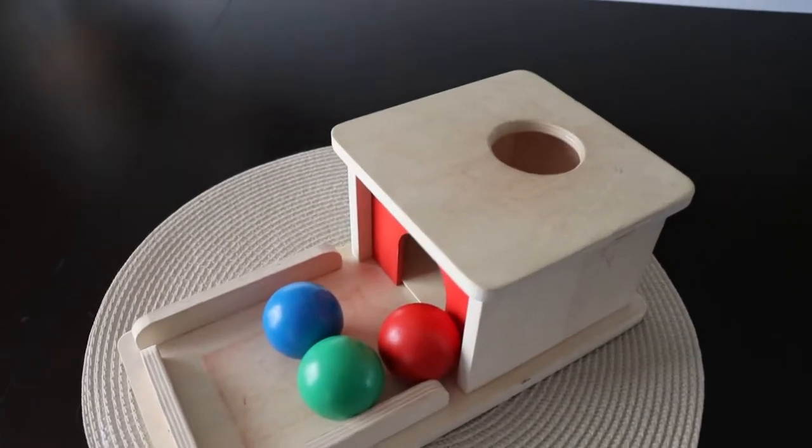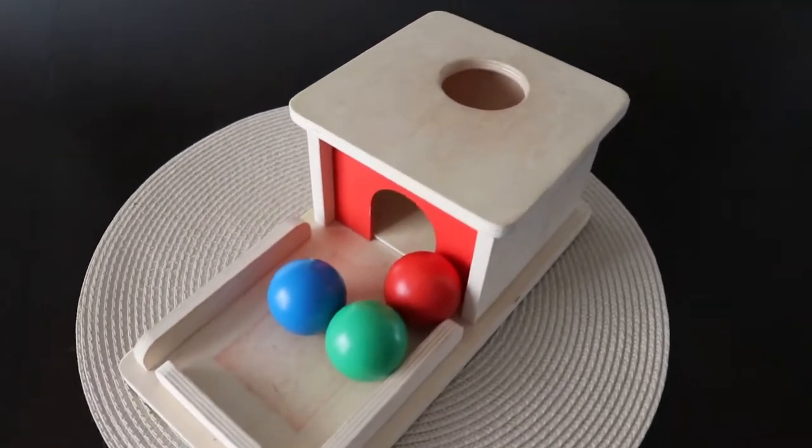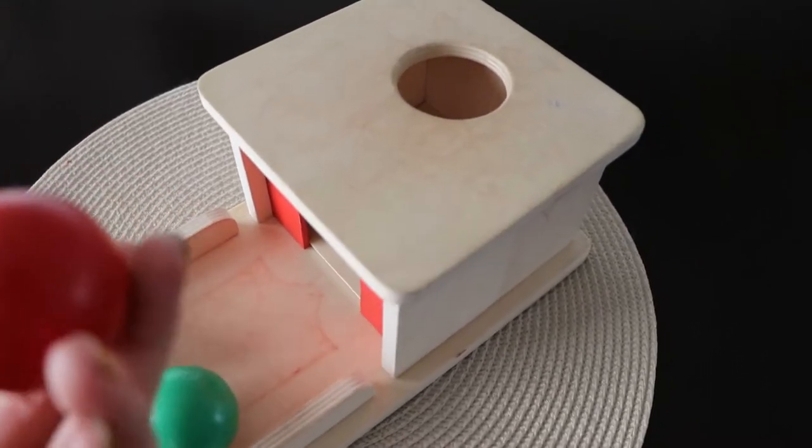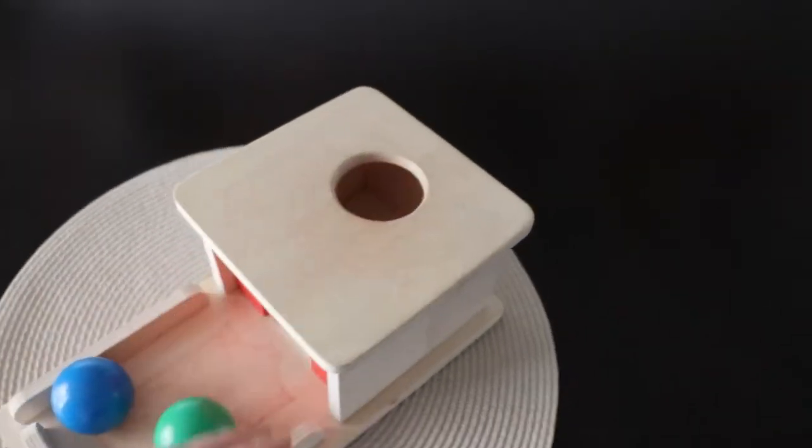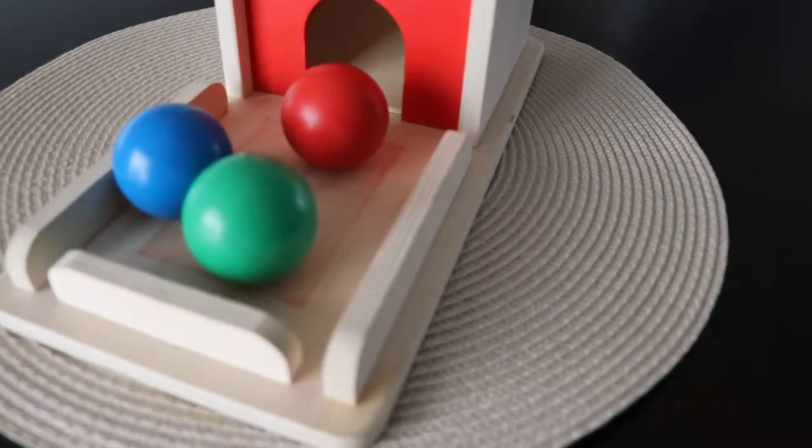Next up is the object permanence box, another classic Montessori toy that he really got the hang of pretty early on. I want to say six or so months, seven months, and you just put the ball in and it drops down.